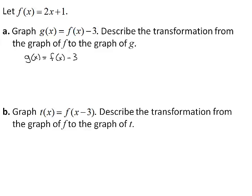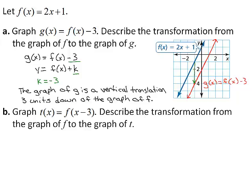The function g is of the form y equals f of x plus k, where k equals negative 3. Because k is negative, the graph of g is a vertical translation three units down of the graph of f.